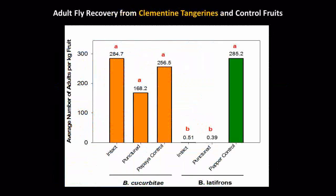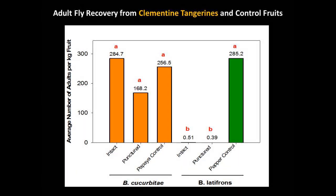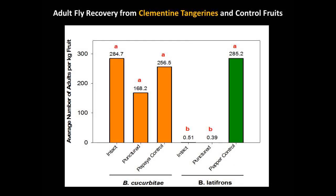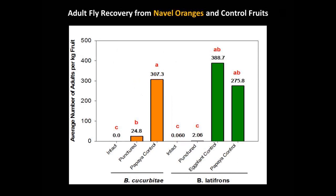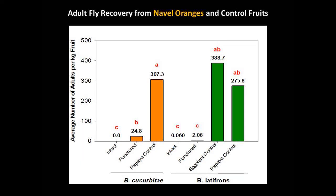For clementine tangerines, there was no significant difference in adult recovery among intact fruits, punctured fruits, or the papaya control for melon fly, while adult recovery of Bactrocera latifrons was significantly less in both intact and punctured fruits than from control Anaheim peppers. For navel oranges, there was no adult melon fly recovery from intact fruits, and adult recovery from punctured fruits was significantly less than from papaya controls. Adult Bactrocera latifrons recovery from navel oranges was significantly less from both intact and punctured fruits than from either eggplant or papaya controls.